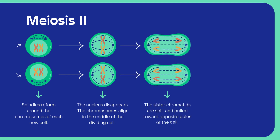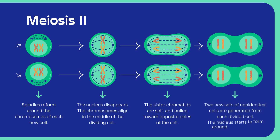Meiosis 2, Stage 3: sister chromatids split and move to opposite poles. Stage 4: two non-identical cells are generated from each divided cell, with a reformed nucleus.